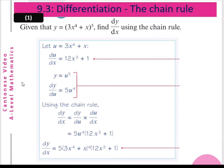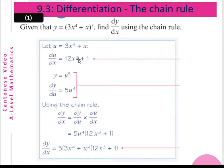Let's do an example. Given that y equals (3x⁴ + x)⁵, find dy/dx using the chain rule. We let u equal 3x⁴ + x, so du/dx equals 12x³ + 1. Then y equals u⁵, so dy/du equals 5u⁴.